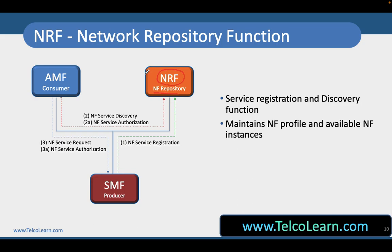This NRF works like a Yellow Pages where all the producer NFs — all the network functions which are acting like a producer — have to publish their information with the NRF. And whenever there is a consumer who wants to access some of the services from these producer NFs, they have to do the service discovery from the NRF. So every time I want to consume some services, I need to get the information about the producer from the NRF.